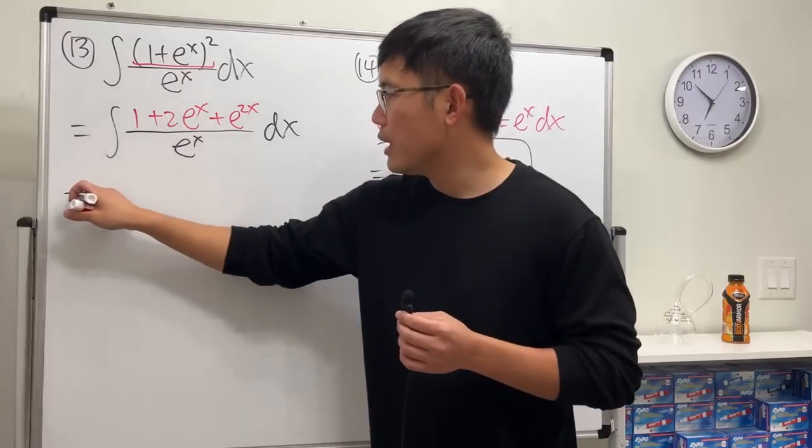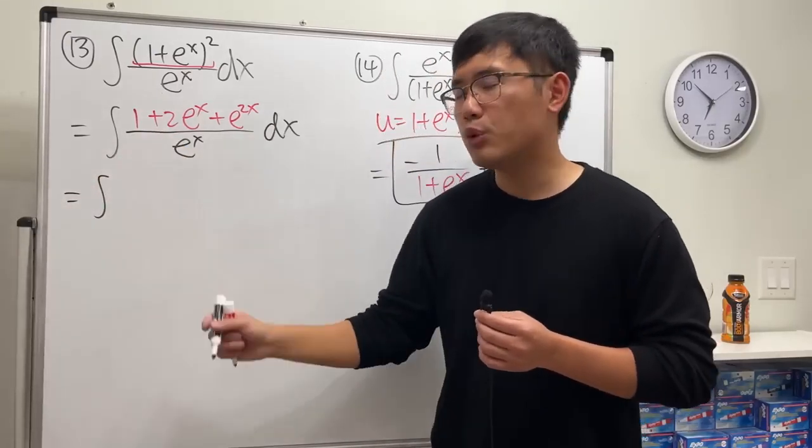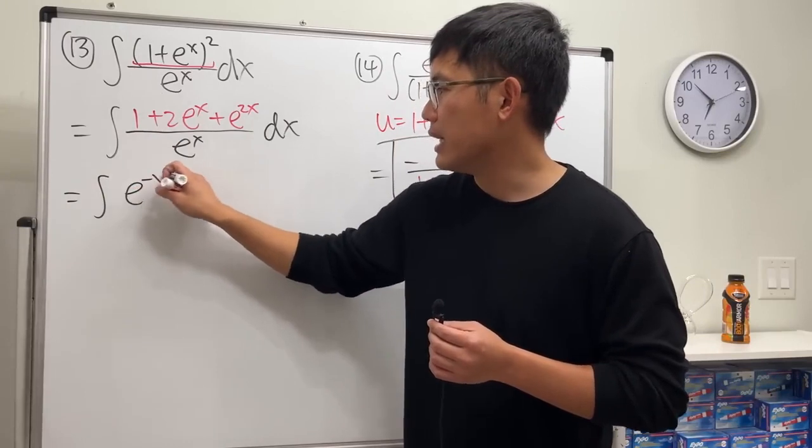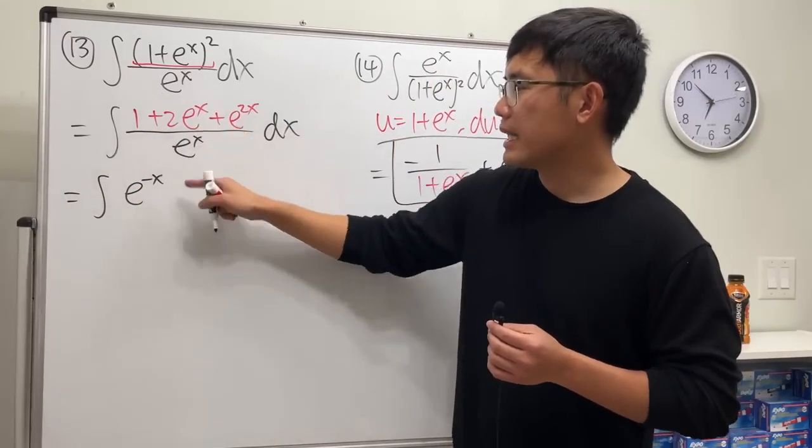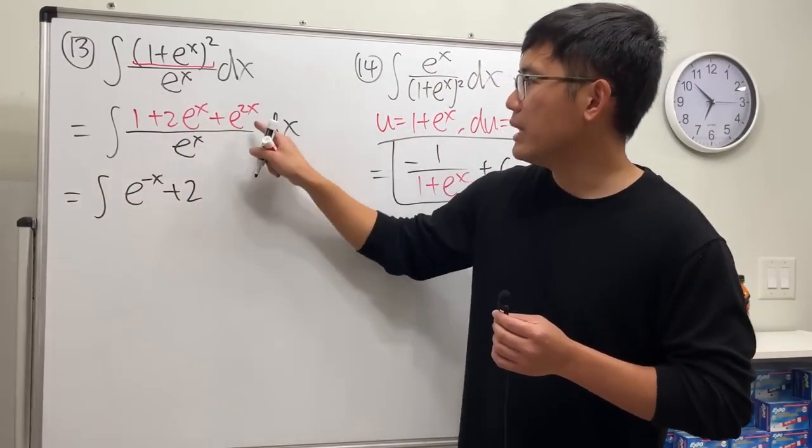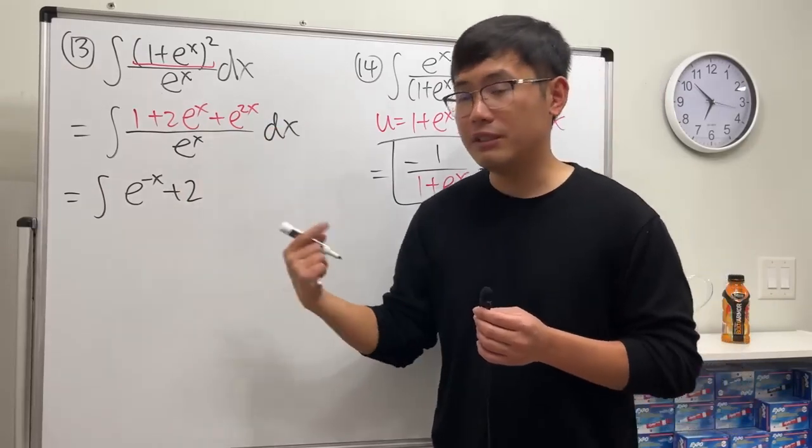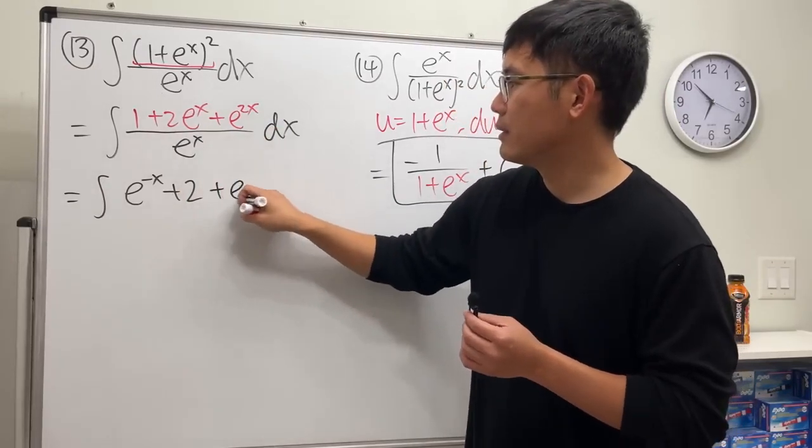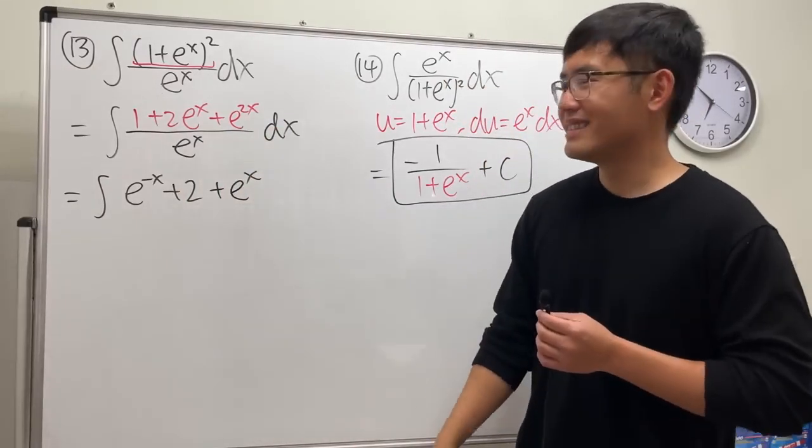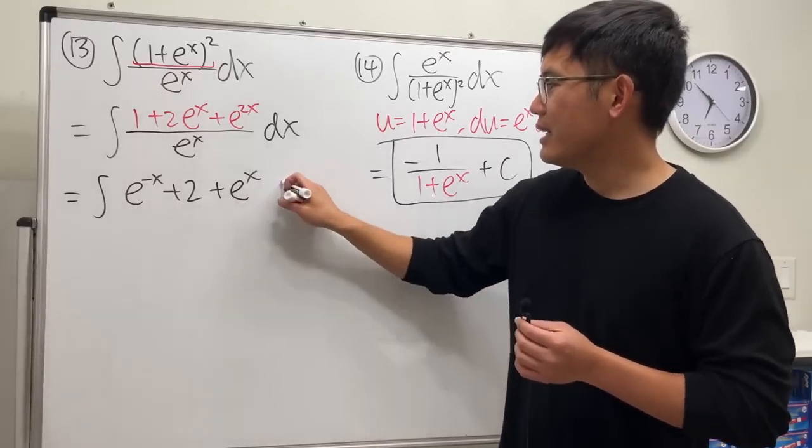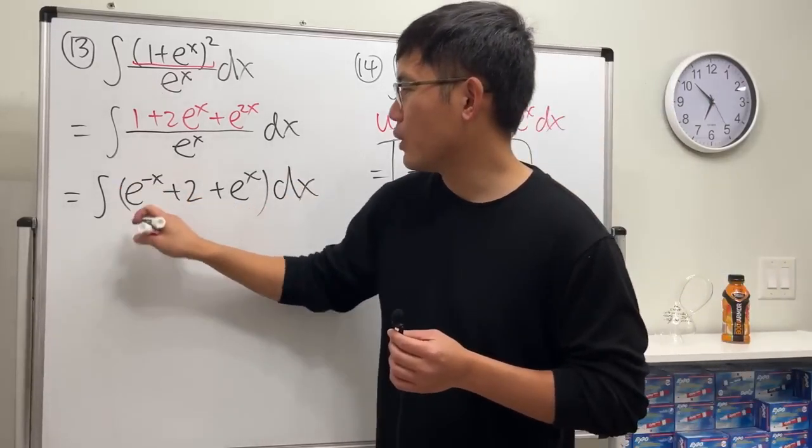I'm going to simplify this. 1 over e to the x, I will write it as e to the negative x. This and that cancel, so we have plus 2. Lastly, this divided by that, we have e to the x. All right, so that's what we have, and we can just then integrate. All this is not so bad either.